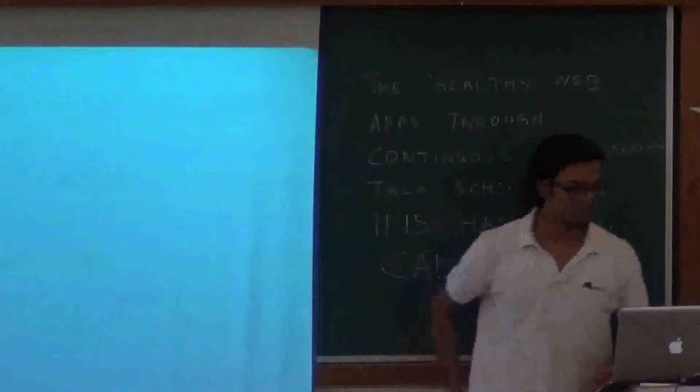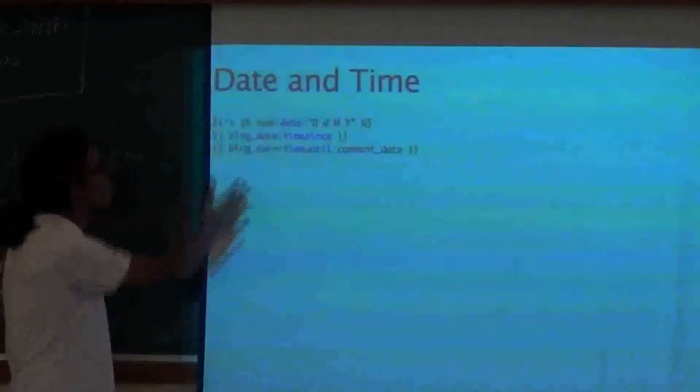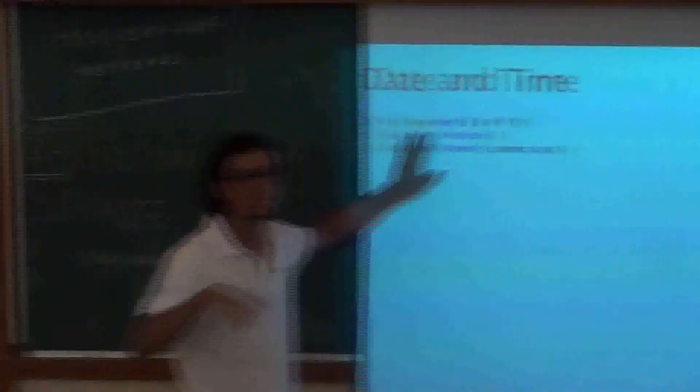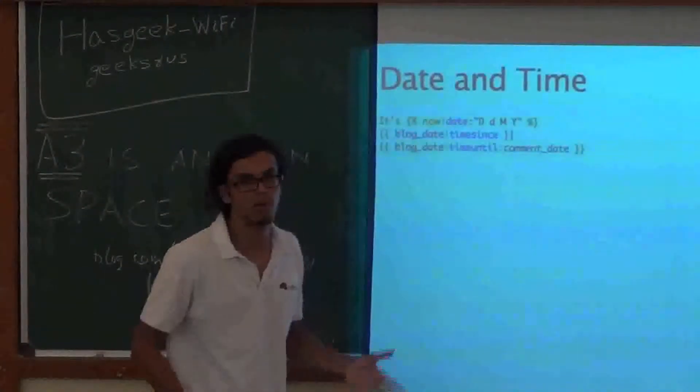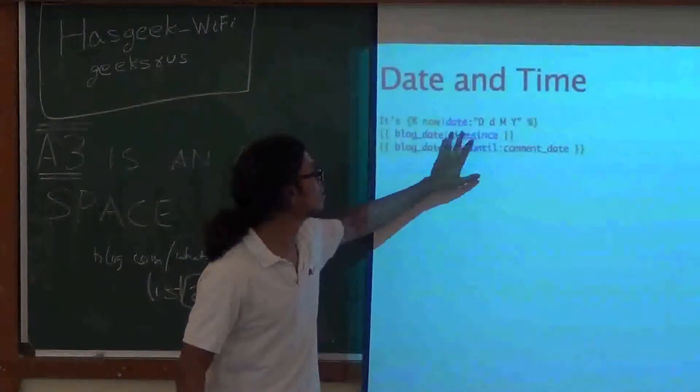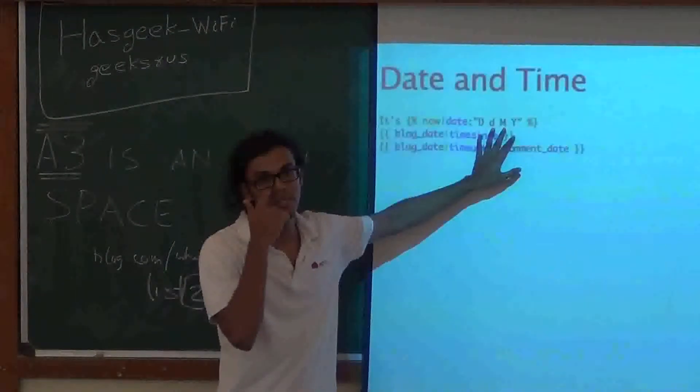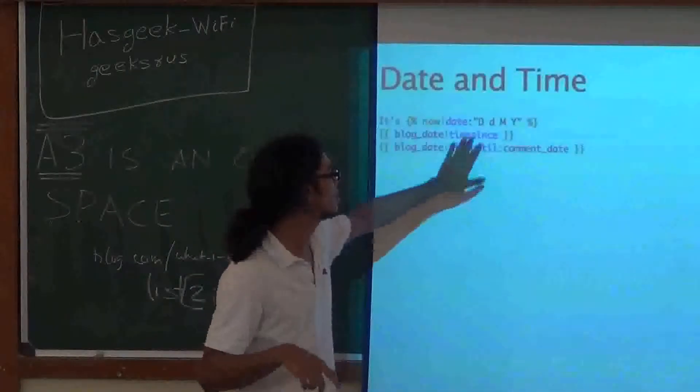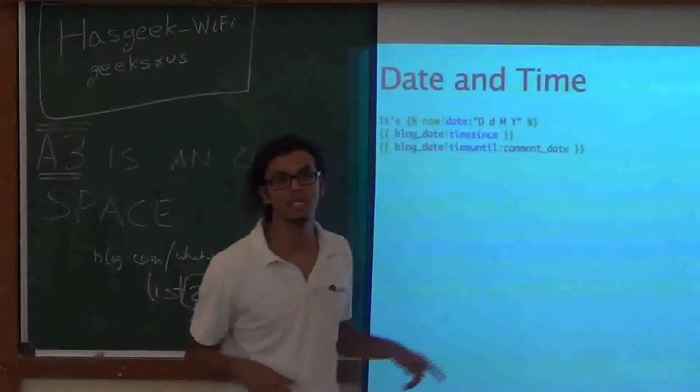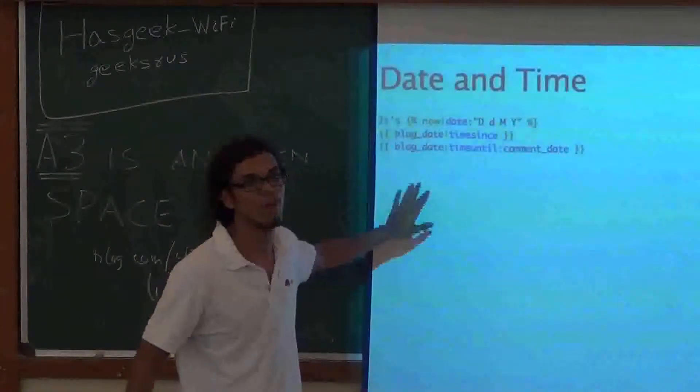Date and time. Django provides this nice tag called now, which is datetime.now. And then you can pass it to a filter called date, and provide the same string you provide to strftime, and it'll format the time.